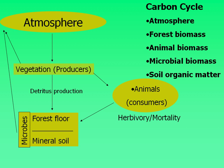To understand the ecology of a forest ecosystem, or any ecosystem, you really need to understand the carbon cycle. You're welcome to pause the presentation to take some notes or get more details. The five major components of the carbon cycle include the atmosphere, the forest or vegetative biomass — your plants and your trees — your animal biomass, your microbes, which also contribute a great deal to the carbon cycle, and soil organic matter, the stuff locked up in the soil.